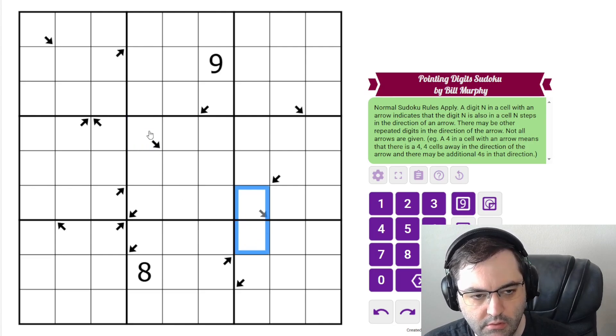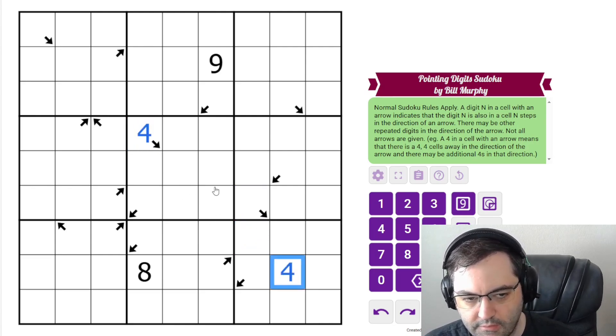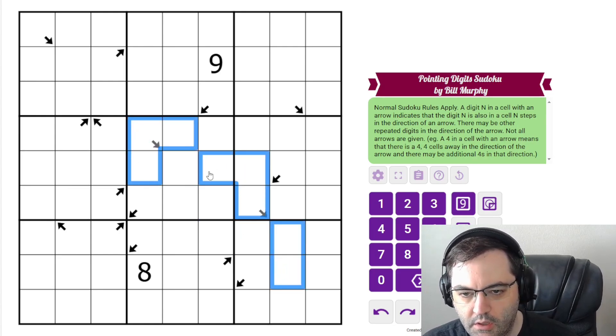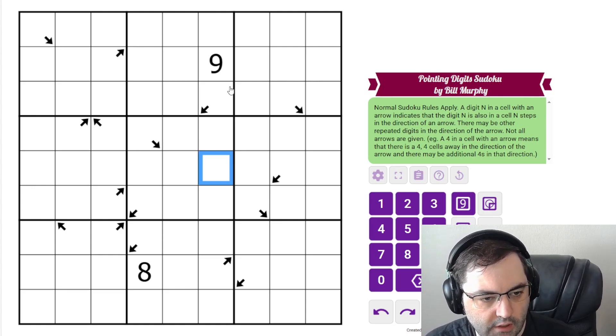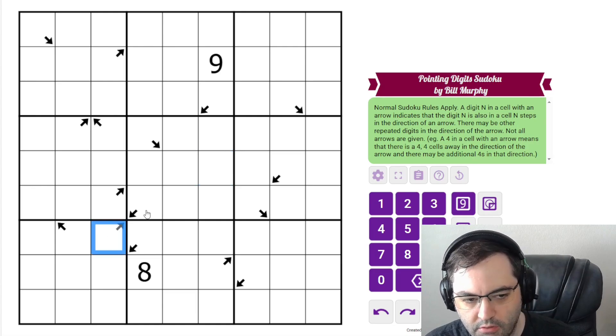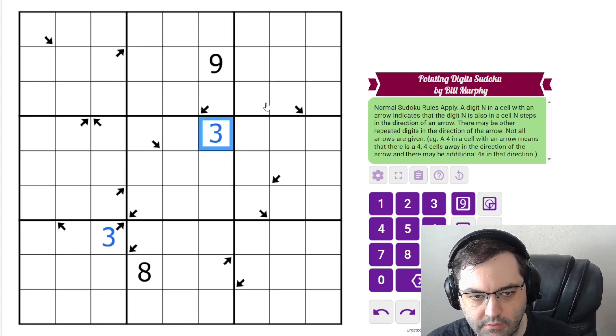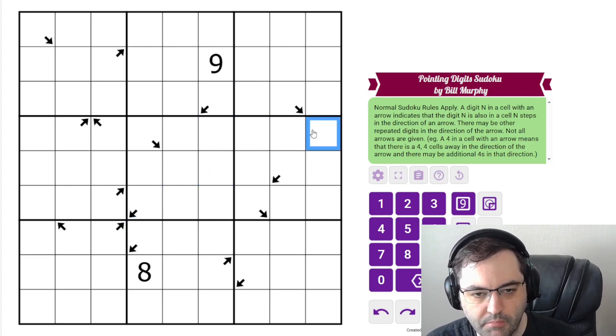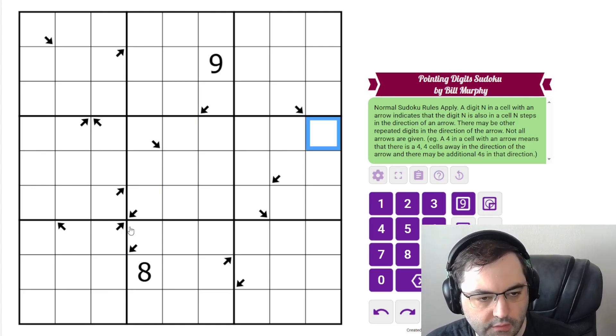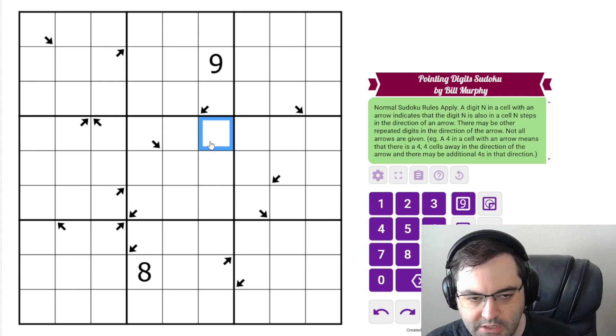If this had been a 4, then that would say this is a 4 because that's 1, 2, 3, 4 cells away. And those are the rules. There could be additional copies of that digit. Say here, if this were a 3, this could be a 3, this could be a 3, and there's also a 3 here, say. But that's what the rule requires, is that there is a digit matching it that many cells away.